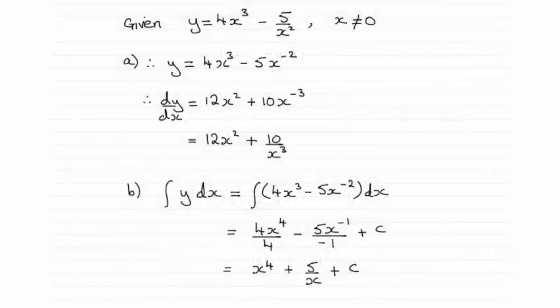Hi there. Now for this next question then, we were given that y equals 4x cubed minus 5 all over x squared, x not equaling 0.